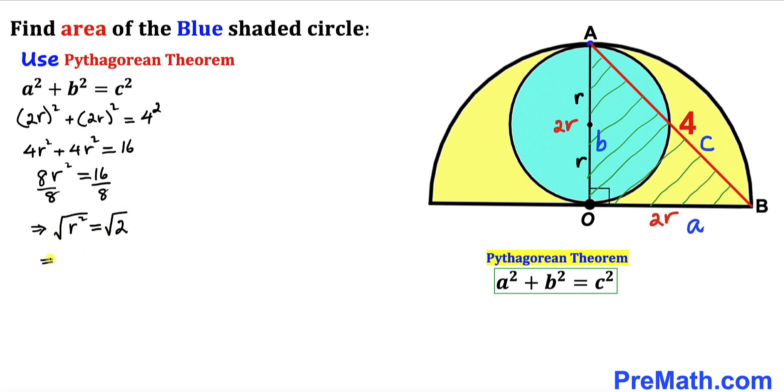So therefore our r radius turns out to be √2.